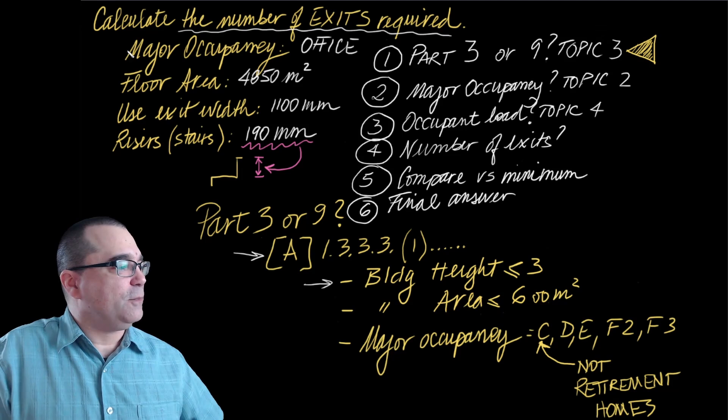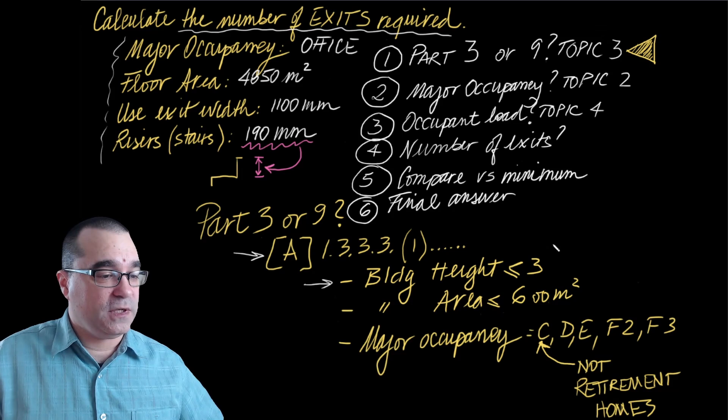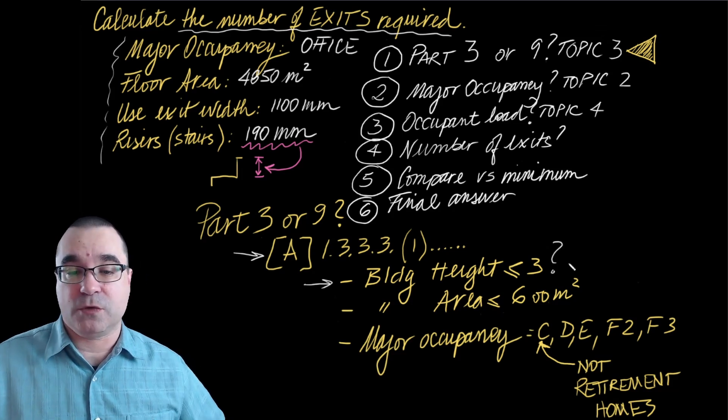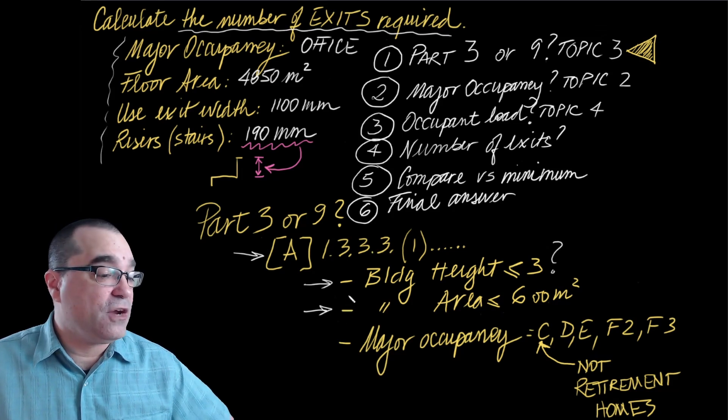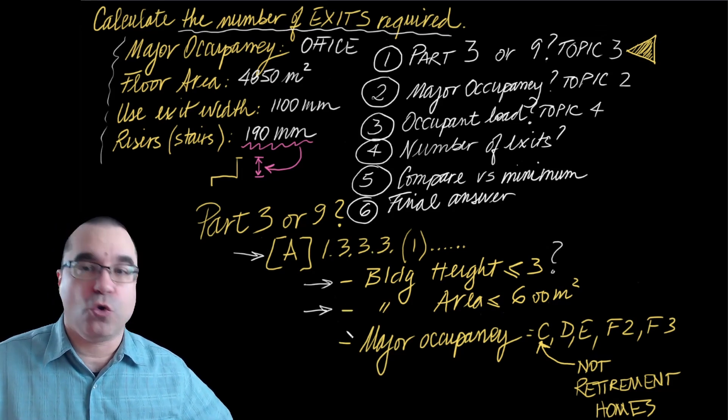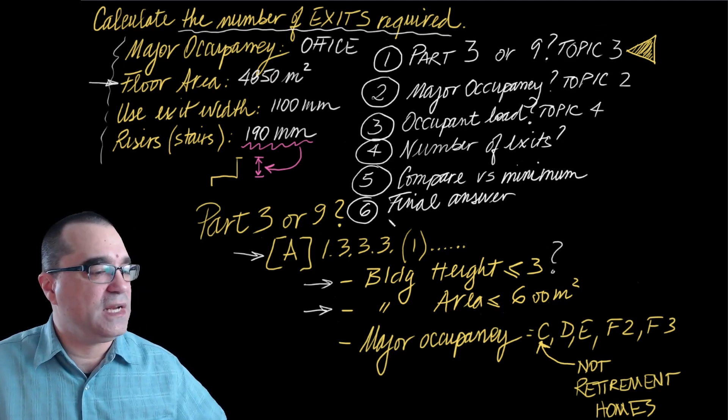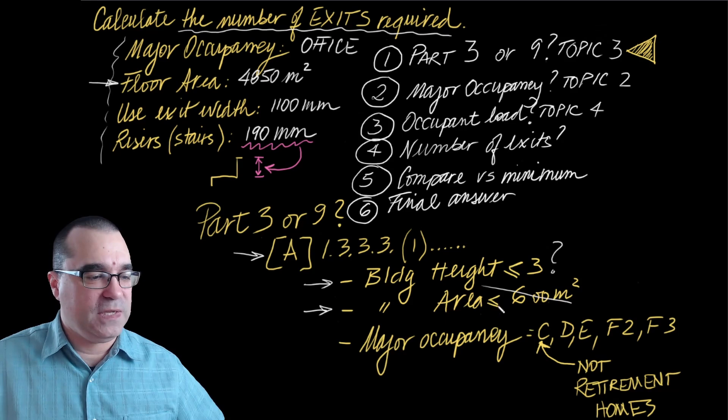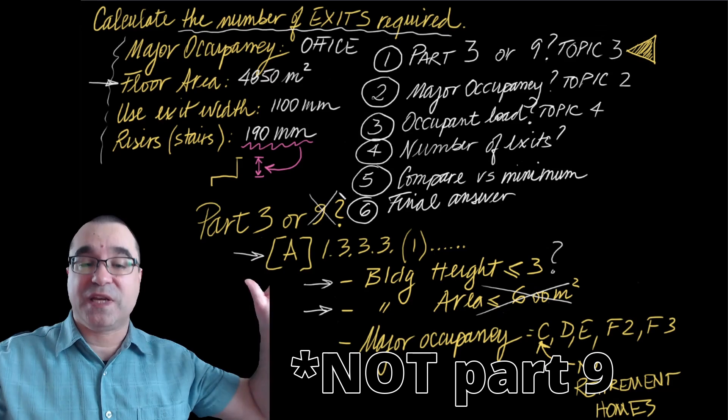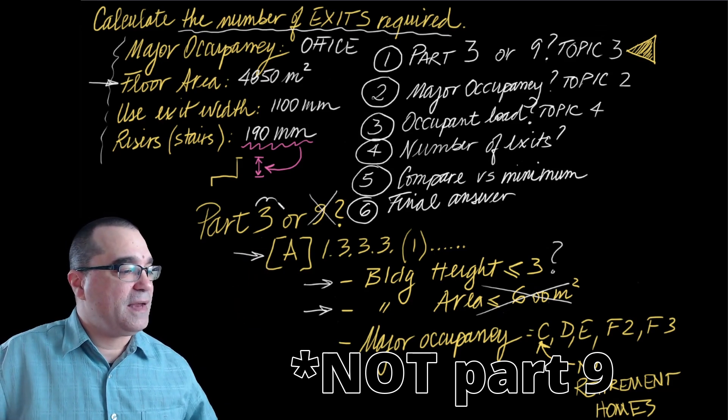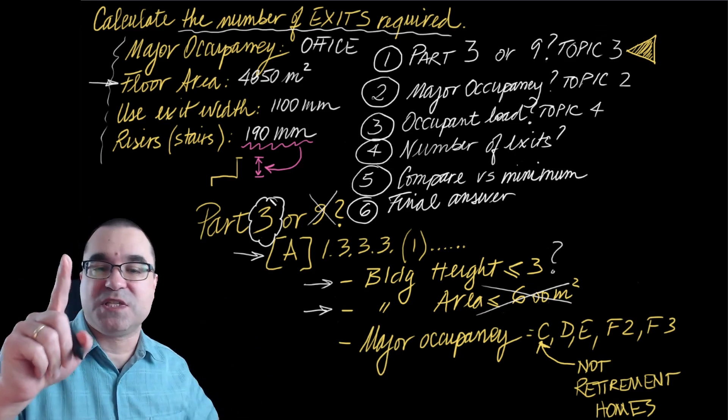So the first one is a building that has to be no more than three stories right here. Well, based on the information that I'm seeing here, I can't tell. There's no information about number of stories, so I can't do anything with this one here. Let's try the next one. Floor area, building area of 600 square meters or less. Our building, look at this, floor area of 4,850. Definitely more than that. That means automatically this is a part three building. I don't even have to look at anything else. Amazing. We're done with step number one.